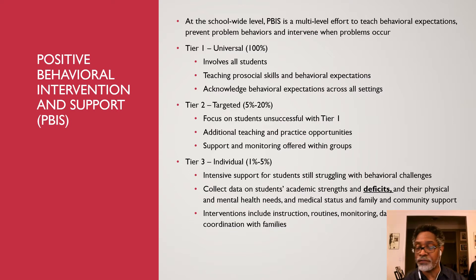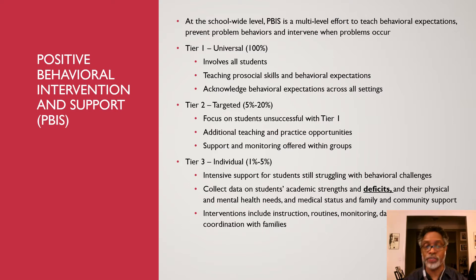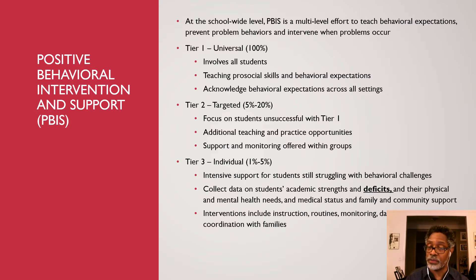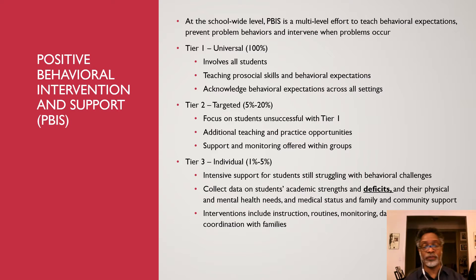Those portions of the triangle are representative of tiers. Tier 1 is universal — it covers 100% of students and involves ground-level teaching of pro-social skills and behavioral expectations. It acknowledges that there are behavioral expectations across all settings: in the classroom, in specials, in the hallway, in the cafeteria, at assemblies, and on field trips. It doesn't matter where you are — there are behavioral expectations for you wherever you go and whatever you do.